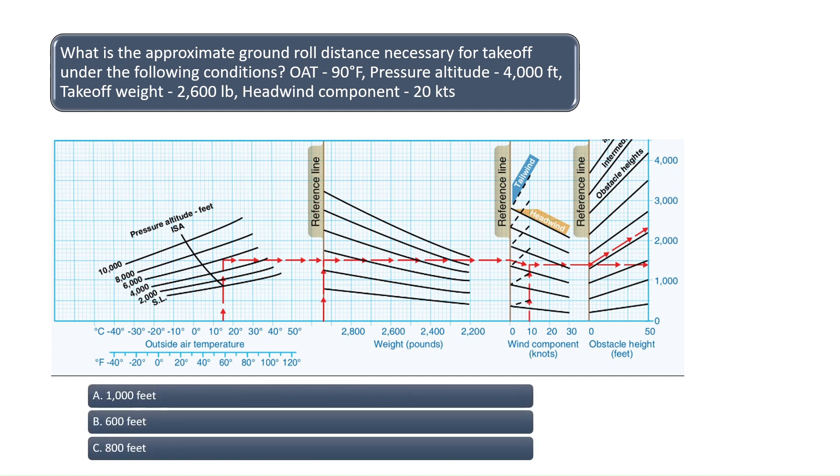To find the answer to this question, start by drawing a line up from the 90 degree outside air temperature line at the bottom of the chart. Draw the line up until it intersects the 4,000 pressure altitude line. Then draw the line to the right and then down until it meets the takeoff weight of 2,600 pounds as illustrated in the middle of the chart.